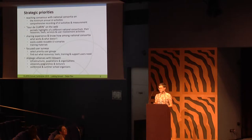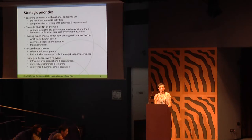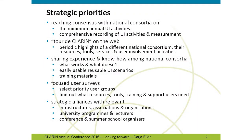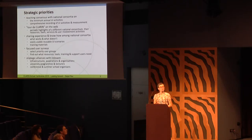I would like to focus on key target groups and priority user groups and do focused user surveys, because I think we don't really know the user groups that we want to attract to use CLARIN resources and tools. I would like to get to know them better, get their feedback, learn what they need from us, and then start working from there. I would also like to start cooperating with relevant infrastructures, associations and organizations. I'm already in touch with some university programs and lecturers directly to incorporate CLARIN into curricula, and I would also like CLARIN to be more present at key conferences and summer schools in digital humanities and social sciences to help promote our resources and services directly to researcher communities.